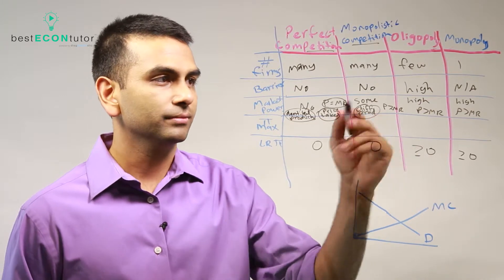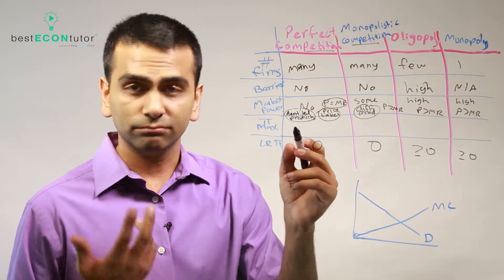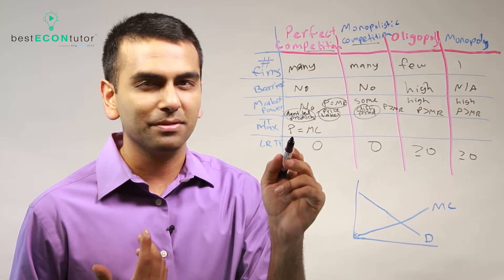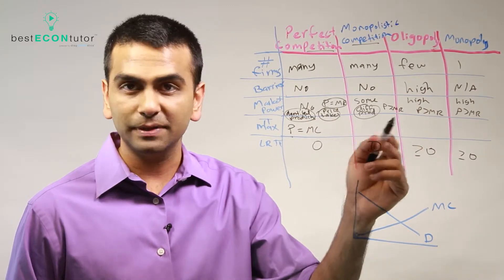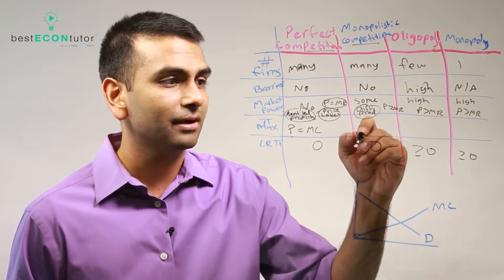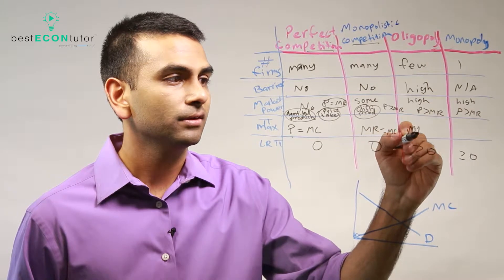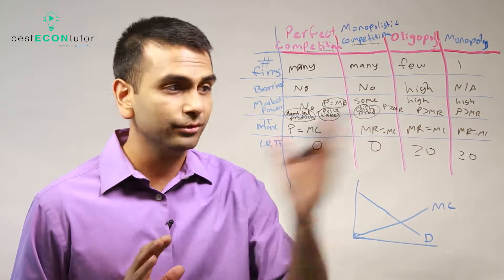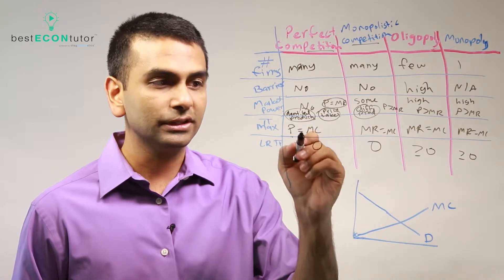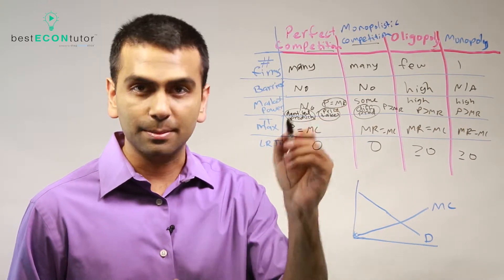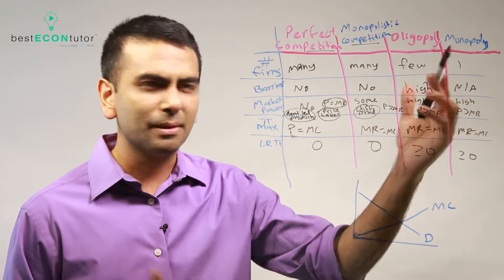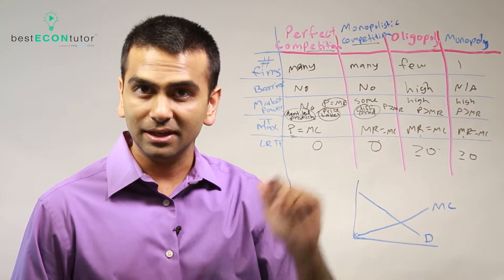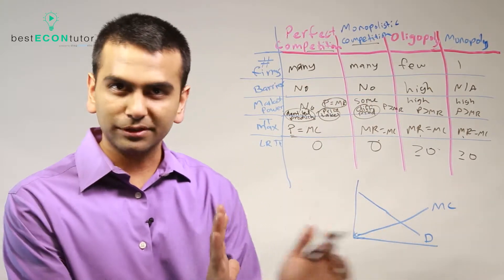To maximize profit, the universal condition is MR equals MC. For perfect competition you can also use P equals MC since P and MR are the same, but for monopolistic competition, oligopolies, and monopolies — where P and MR are not equal — you must use MR equals MC. That is the condition to maximize profits regardless of market structure.